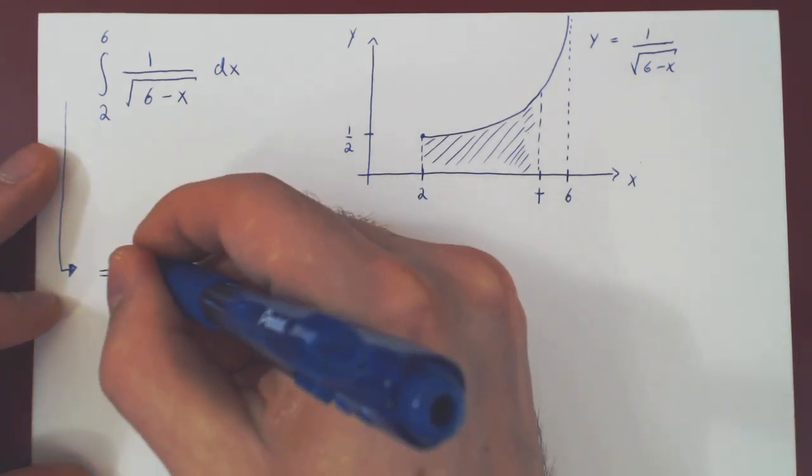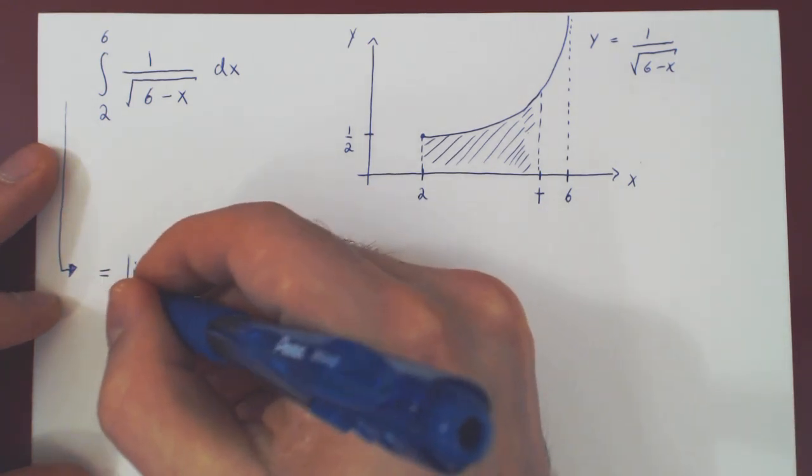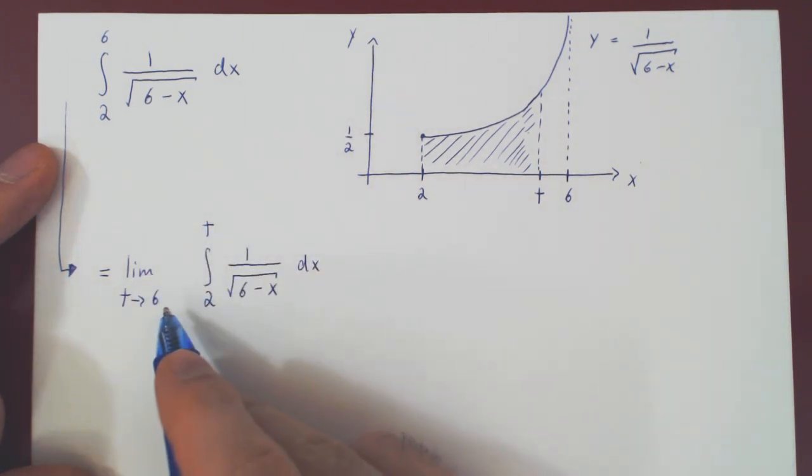if you write this, this is actually wrong. Because when t approaches 6,